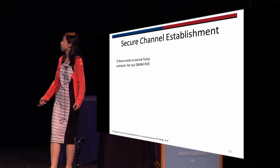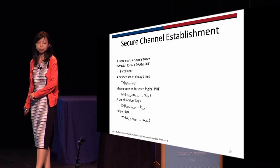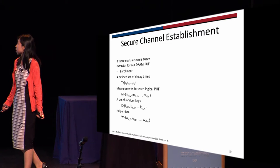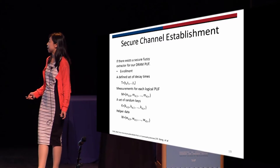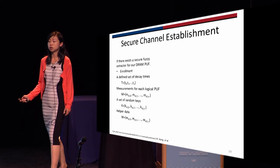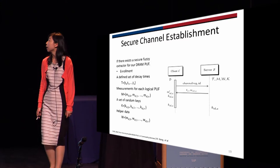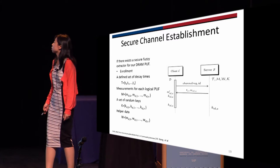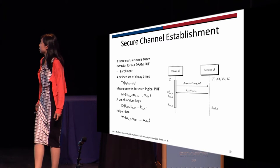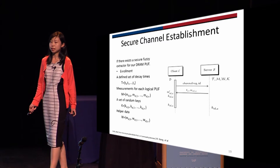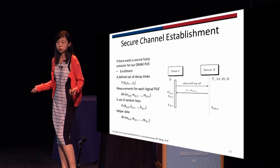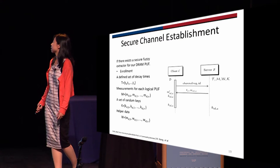If there exists a secure fuzzy extractor for a DRAM PUF, then a trusted party can take an enrollment and generate a set of random keys. Based on the measurement and the keys, helper data is generated. Then if they want to establish a secure channel, the server sends the challenge and the helper data to the client. The client takes the measurement, uses the helper data to generate a key locally, and then both of them share the same key and can communicate safely.